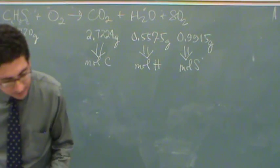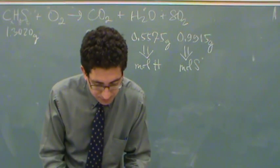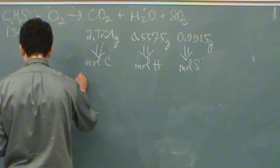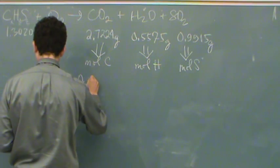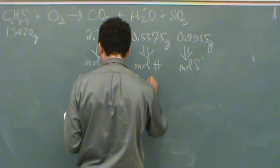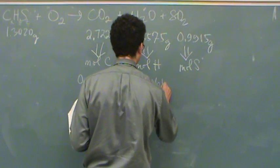So in this example, I can give the numbers. The numbers for the moles of carbon you should get is 0.0619. And for moles of hydrogen, it should be 0.0619.